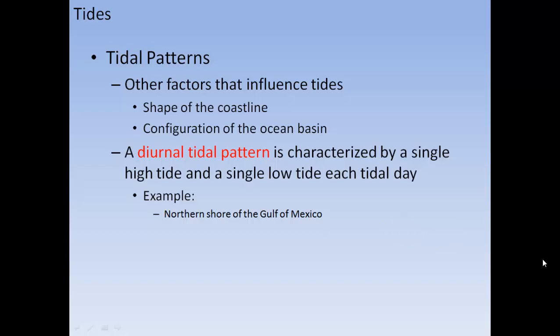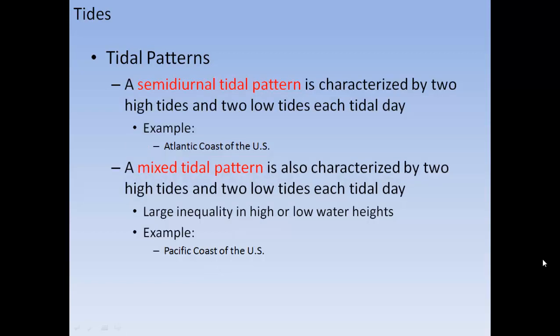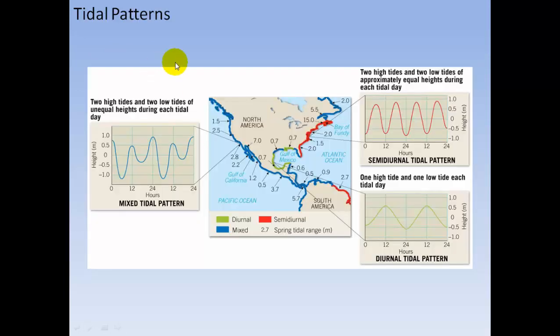The shape of the coastline and ocean basin also influence tides. A diurnal tidal pattern has a single high tide and single low tide each day, as found on the north shore of the Gulf of Mexico. A semi-diurnal tidal pattern has two high tides and two low tides each day, as on the Atlantic coast. A mixed tidal pattern also has two highs and two lows but with large differences in water heights, as seen on the Pacific coast.